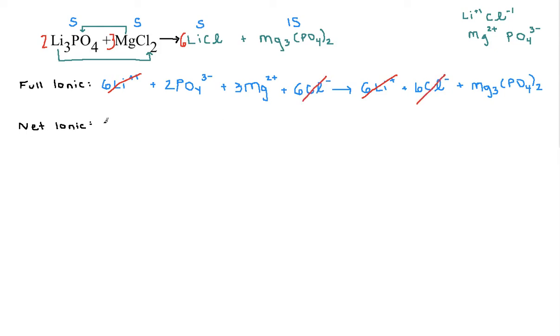and so what I'm left with, that's going to be my net ionic. So I've got 2 PO4 3 minuses, plus 3 Mg 2 pluses. And what that gives you is your Mg3(PO4)2.